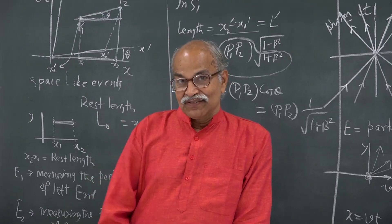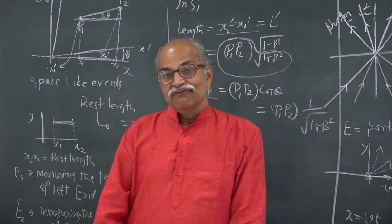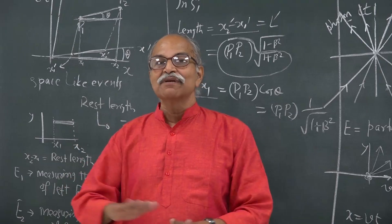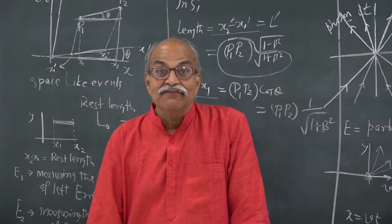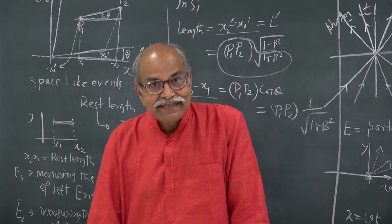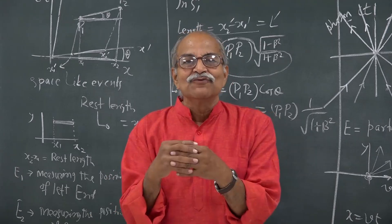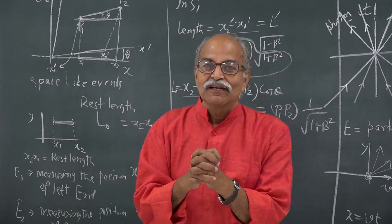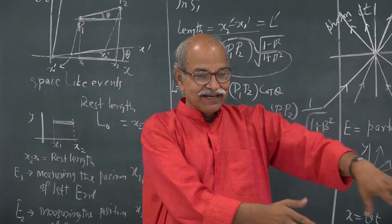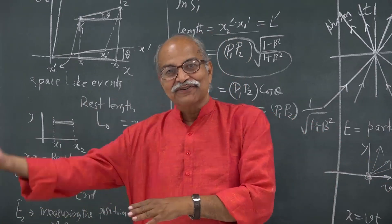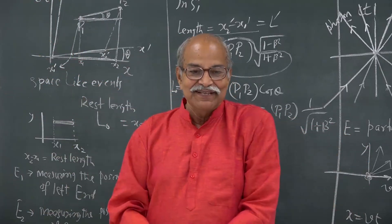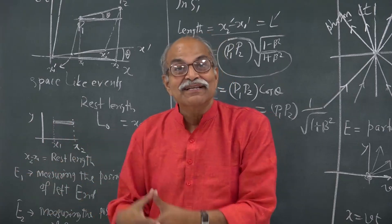Using Lorentz transformations and Maxwell's laws, we obtained the transformation equations for the E field and B field, and found that electric and magnetic fields are not two separate entities. They are part of one quantity we call the electromagnetic field. Once you fix a frame, this quantity gives you electric and magnetic field components, but changing the frame mixes them — electric field transforms into a combination of electric and magnetic field in the new frame.